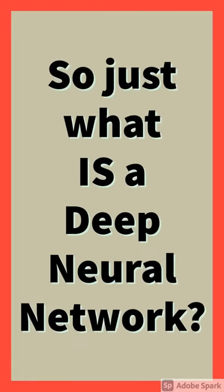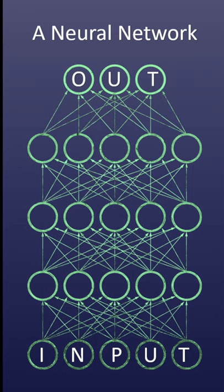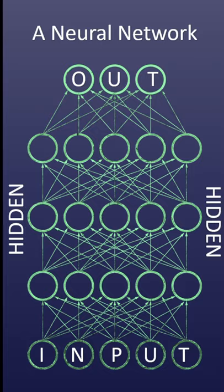So just what is a deep neural network? Neural networks are made up of many layers. They start with what's called the input layer and end with what's called the output layer. Between these two layers lie hidden layers, but let's not worry too much about this for now.